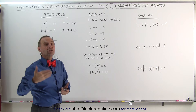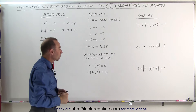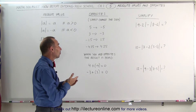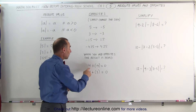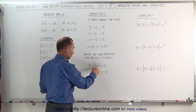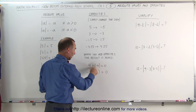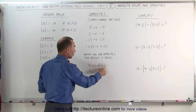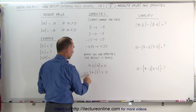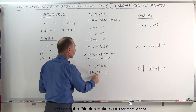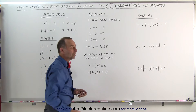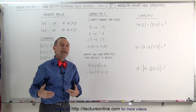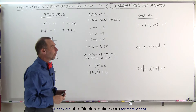Opposites simply means you change the sign. When you add two opposites, the result will always be 0. For example, 4 and its opposite negative 4 — add them together and you get 0. Negative 3 and its opposite positive 3 — add them together and you get 0. Therefore, when you add opposites, you always get 0.